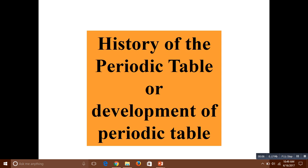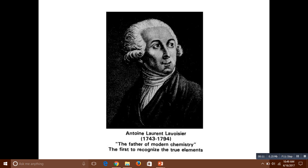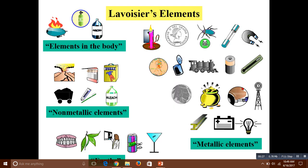First of all, early attempts to arrange the elements on the basis of their properties. Antoine Lavoisier, 1743 to 1794, known as the father of modern chemistry, was the first to recognize the true elements. In 1789, he arranged elements into four groups.